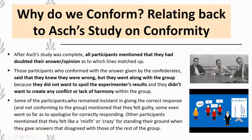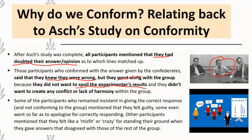Why do we conform? Relating back to the topic — we conform because we don't want to stick out. After Asch's study, when debriefing participants, all of them mentioned that at some point they started to doubt their answer or opinion — looking closely at the lines, wondering if it was a trick question. Those participants who conformed said they knew they were wrong but went along with the group. They didn't want to spoil the experimenter's result — showing an experimenter effect — and they acted in line with the experimenter's expectations.